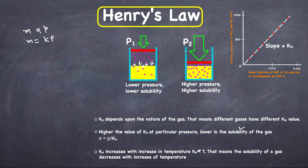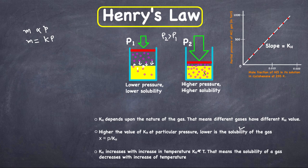Now if we increase the pressure — p2 is greater than p1 — this will increase the number of gas particles per unit volume. As shown in this diagram, as a result more molecules will be striking the surface of the liquid, and hence more molecules will dissolve and the solubility of the gas will increase until a new equilibrium is reached.